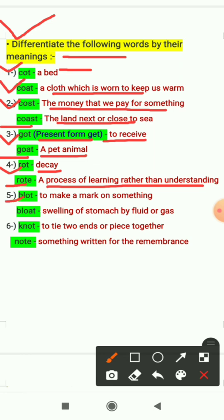Fifth word is blot, it means to make a mark on something. Another word is bloat, it means swelling of stomach by fluid or gas. Sixth word is knot, to tie two ends or pieces together. And next word is note, it means something written for remembrance, something that we write to make us remember.